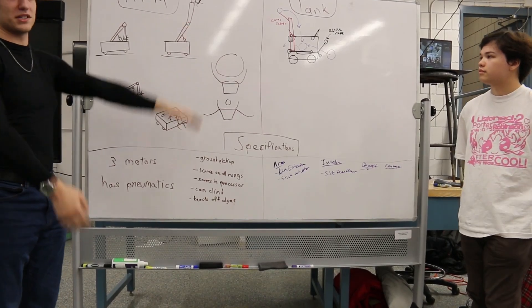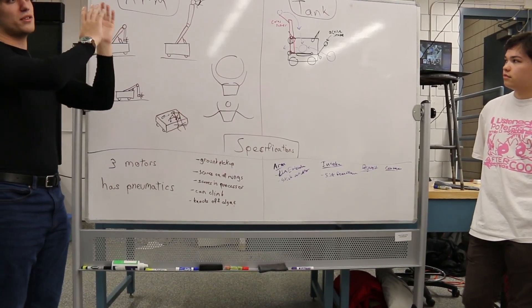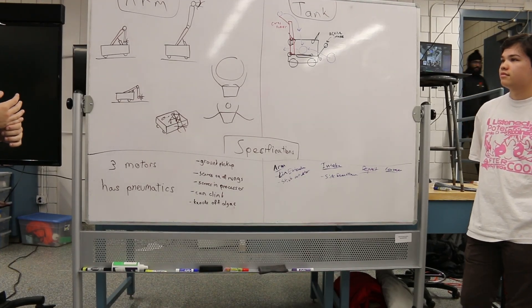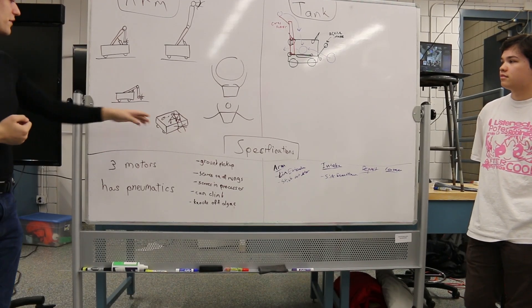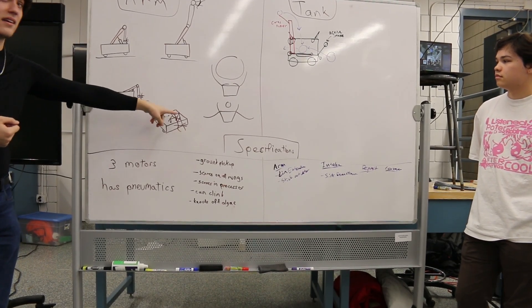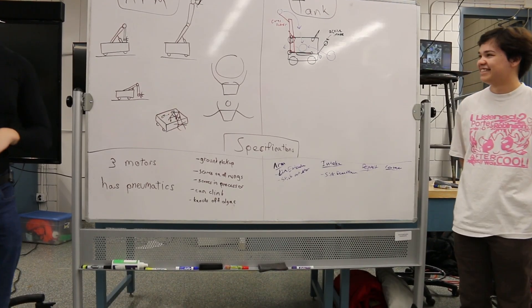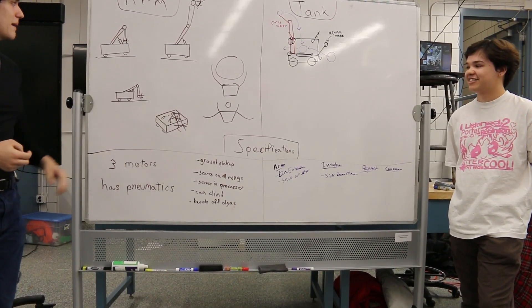So also this will be able to kind of move up and knock out algae from the reef, which will free up space for coral. And then there's also going to be a lot of space in the back here, which we'll need for a compressor and electronics because, you know, pneumatics and such.